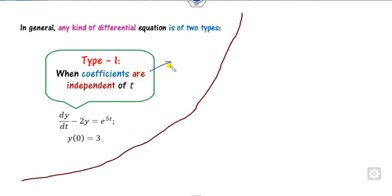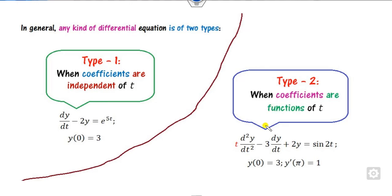As we discussed in our previous lecture — which is available on my YouTube channel — that was a Type 1 case where the coefficients are constants. However, in this lecture, we will see the case where the coefficients are not constant; that is, there is a multiplication with the independent variable. How we can solve this, we will see in this presentation.